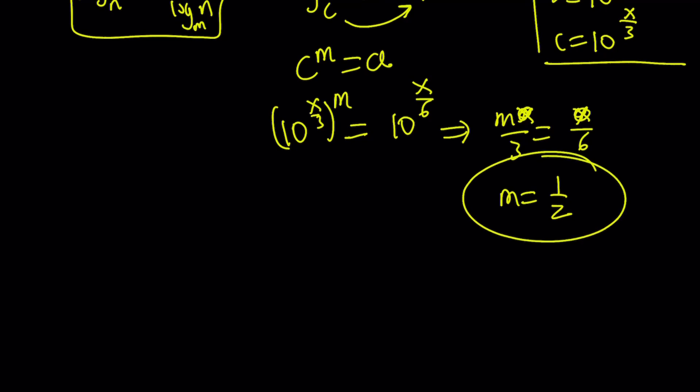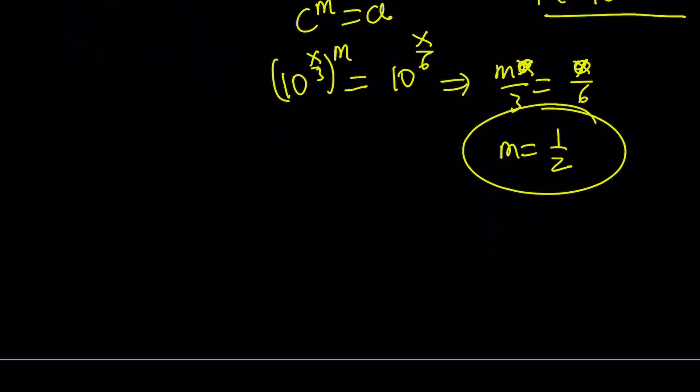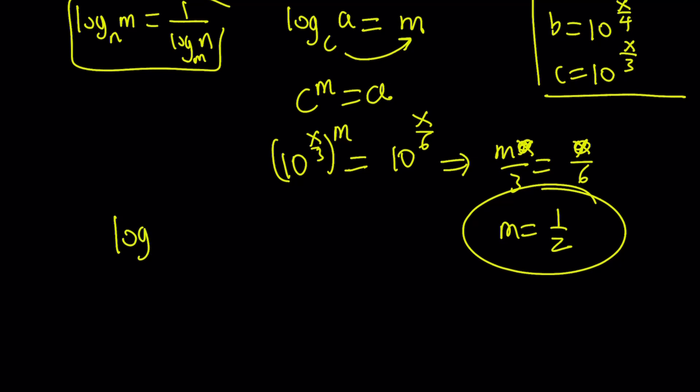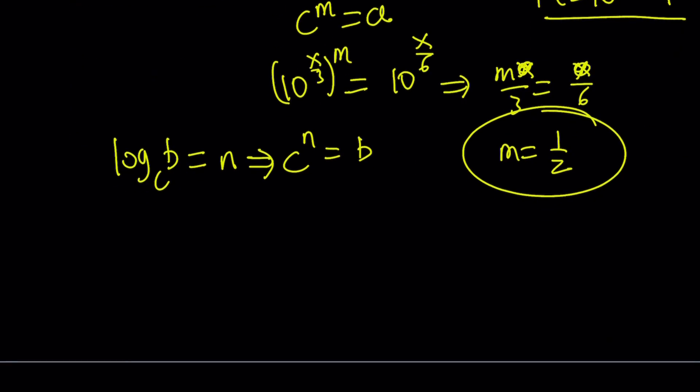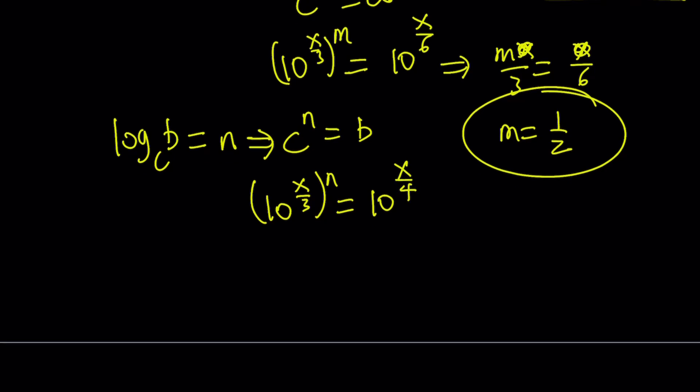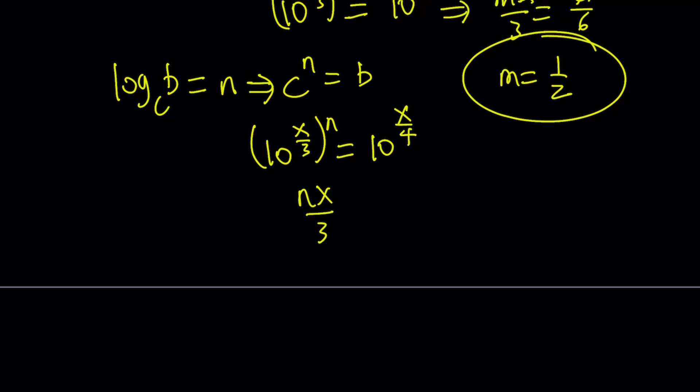And let's go ahead and do the same thing with B and C. So if log B with base C is equal to N, from here I can write C to the power N equals B by using definition again. And now I can replace C with this and B with that. Let's go ahead and do it. 10 to the power X over 3 to the power N equals B, which is 10 to the power X over 4. And from here, similarly, we can find N. We can just write this as NX over 3 equals X over 4. X does not equal 0, we know that, so that cancels out and N becomes 3 fourths. Great.